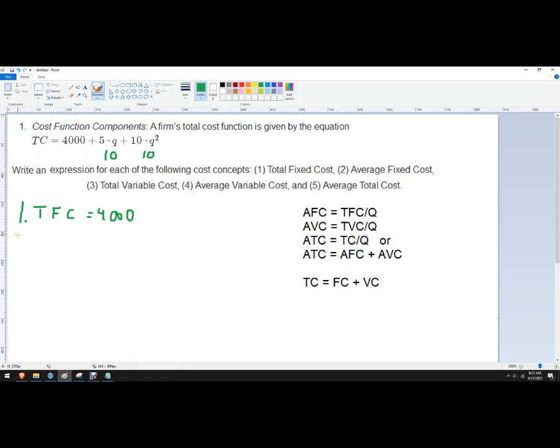Okay, so that's number one. Number two, average fixed cost. So we're just going to take the fixed cost portion. So average fixed cost is this. So it's 4,000 divided by Q.